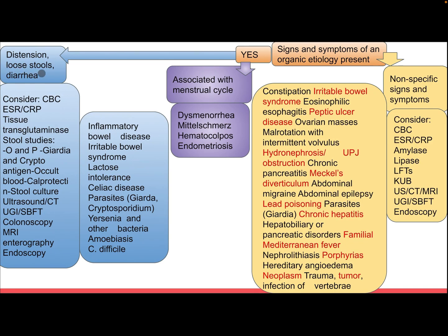Is there distention, loose stool, or diarrhea? Consider complete blood count, ESR, C-reactive protein, tissue transglutaminase, stool study for ova and parasites including giardia and cryptosporidium antigens, occult blood, calprotectin, stool culture, ultrasound, CT, upper GI contrast, small bowel follow-through, colonoscopy, MRI enterography, and endoscopy. Differential diagnosis includes inflammatory bowel disease, irritable bowel syndrome, lactose intolerance, celiac disease, parasites such as giardia, cryptosporidium, yersinia and other bacteria, amoebiasis, and C. difficile.